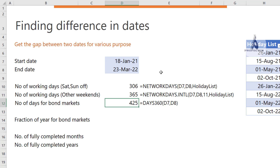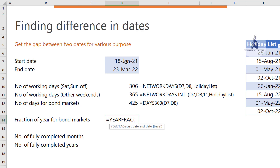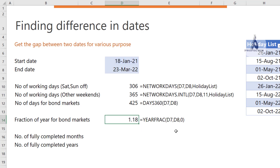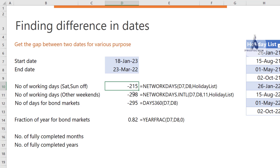If you want the difference between two dates as a fraction of a year — for example, 65 days as 65/365 — use the YEARFRAC function, specifying the start date, end date, and optionally a day-count convention (such as 30/360 for bond markets). Note that YEARFRAC always returns absolute values, so even if the start date is after the end date, you will not get a negative result.